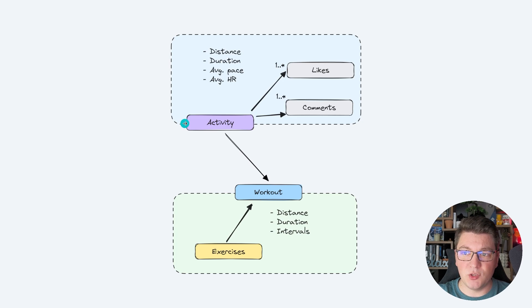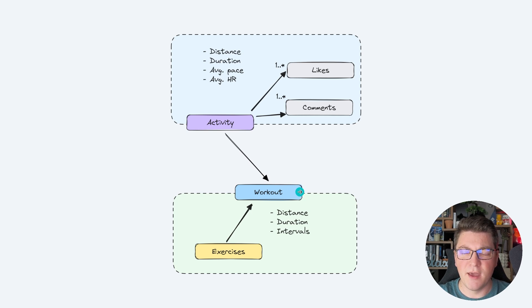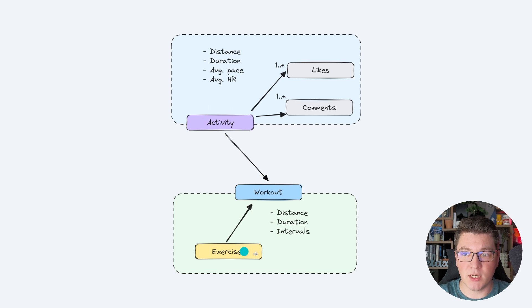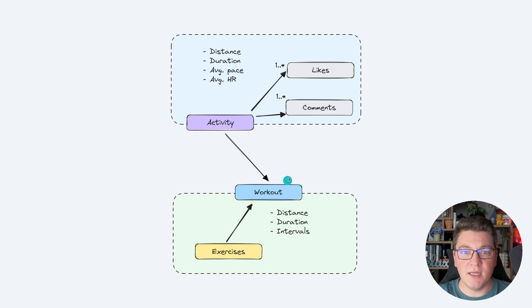Looking at the activities aggregate and the workouts aggregate, the aggregate root sits on the boundary, making it clear that it's the only public-facing part. Everything inside the aggregate boundary is internal and shouldn't be accessible from outside. So if the activity aggregate wants to interact with the workout aggregate, it does so by referencing the workout entity — for example, requesting information about exercises from the workout aggregate root.